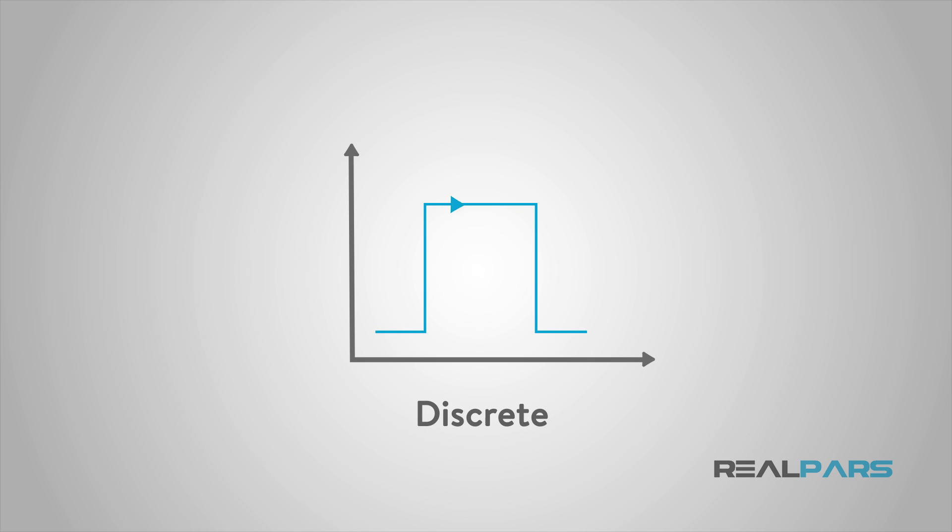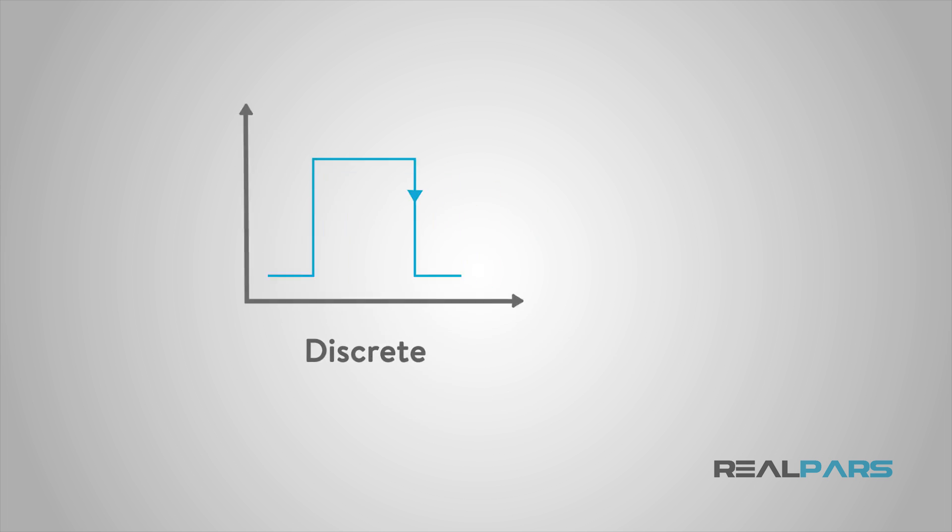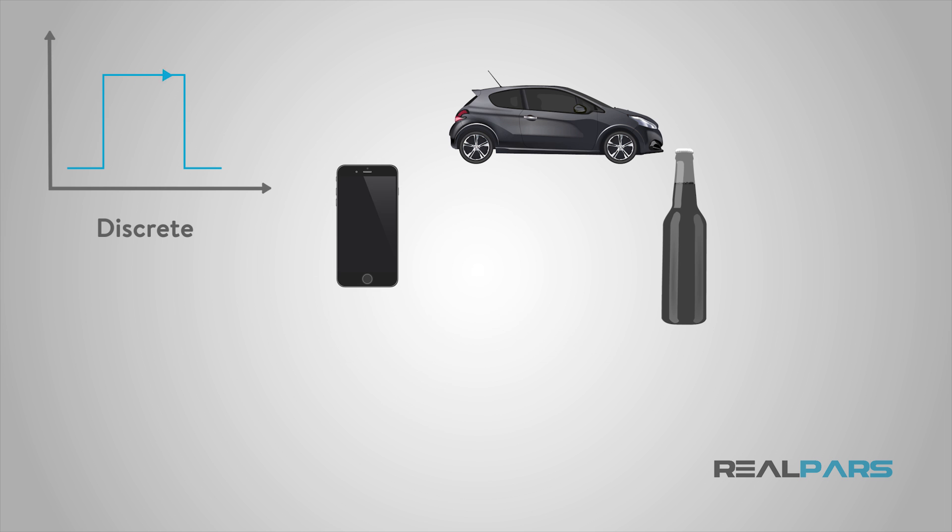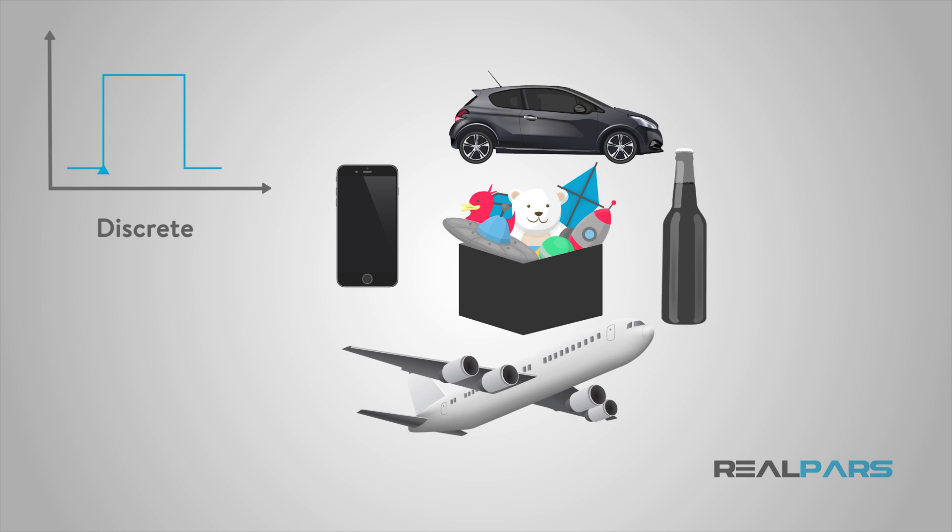So, to sum it all up, discrete automation is the production of parts that are of a quantifiable nature. That may include cell phones, soda bottles, automobiles, airplanes, toys, etc.